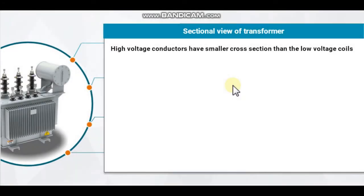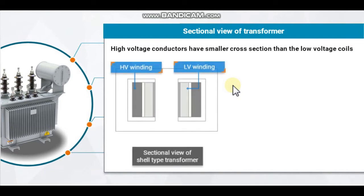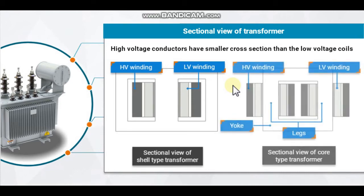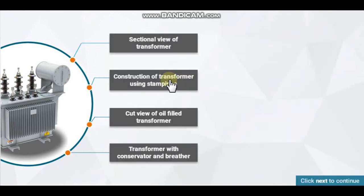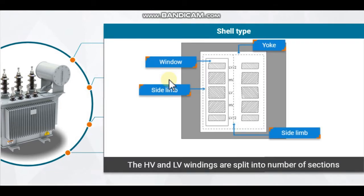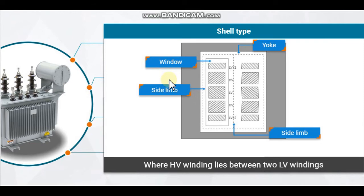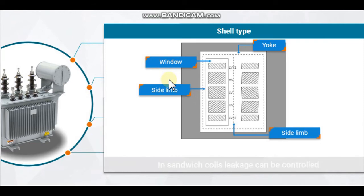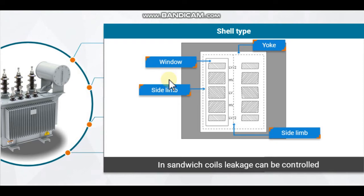High-voltage conductors have a smaller cross-section than the low-voltage coils. Here is the sectional view of the shell type transformer, and this is the sectional view of the core type transformer. The HV and LV windings are split into a number of sections, where the HV winding lies between two LV windings.